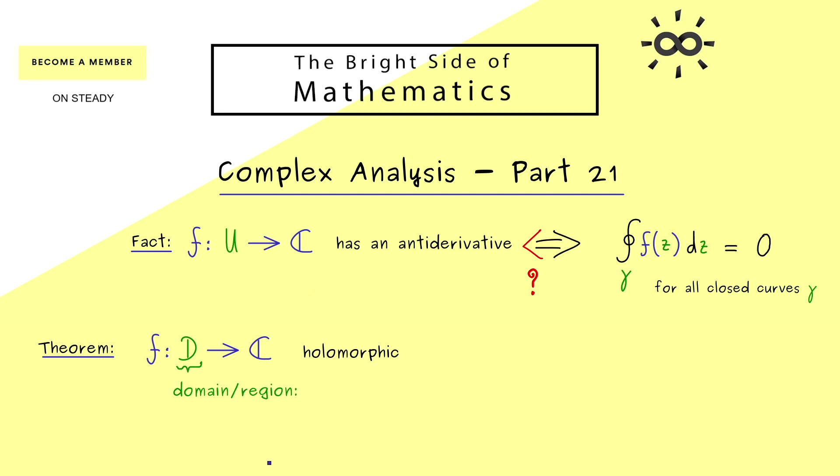However, since it could be confused with the domain of definition for a map, we also use the notion region for it. In fact, this is nothing complicated, it's just a well-behaved subset in the complex plane. There, well-behaved means exactly two things.